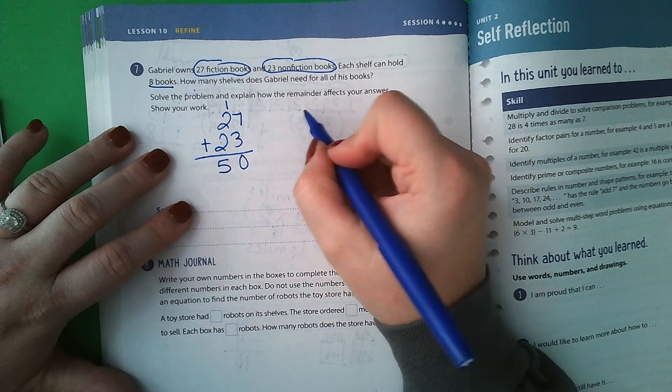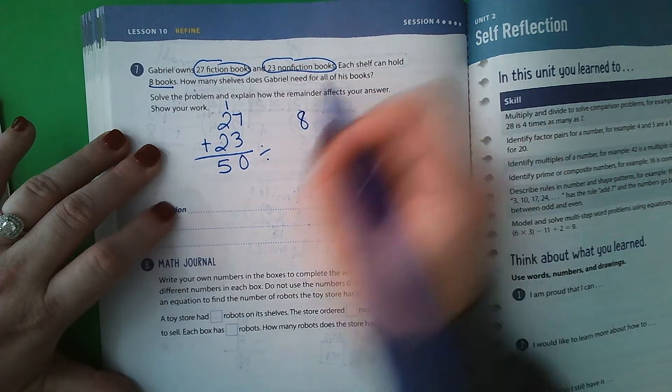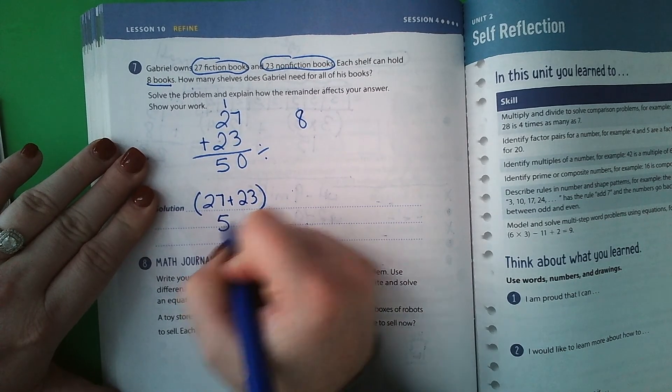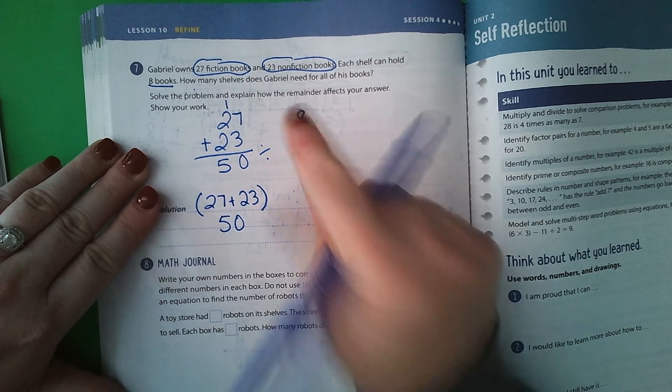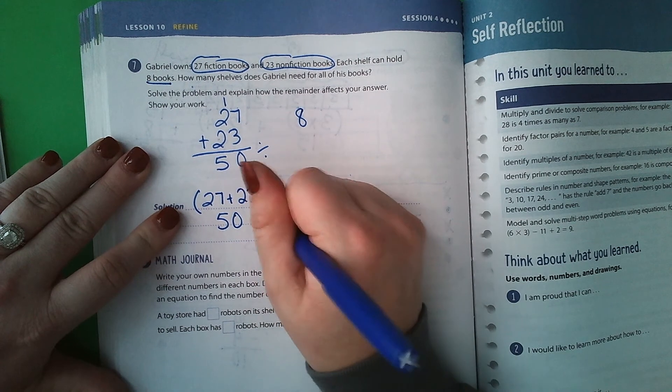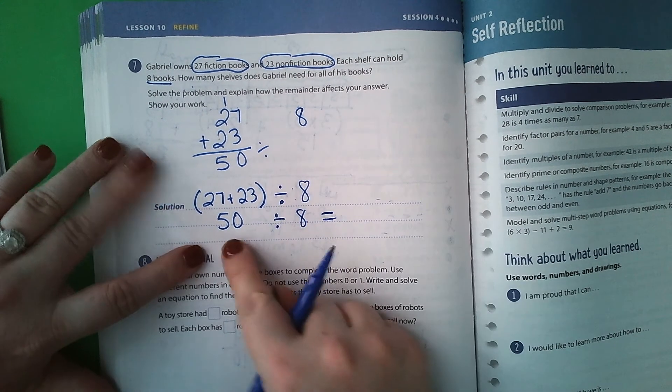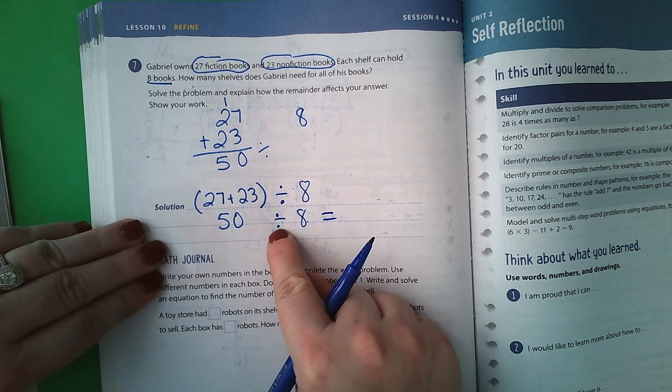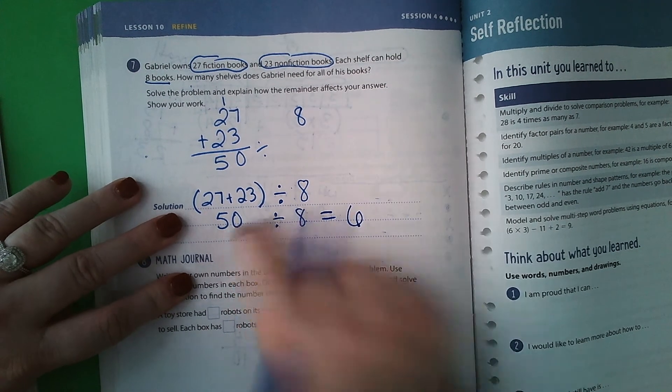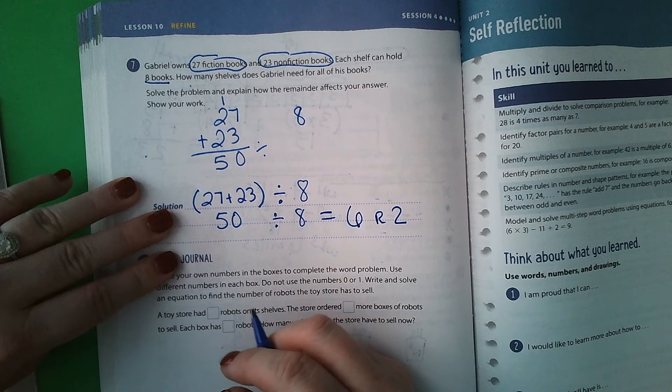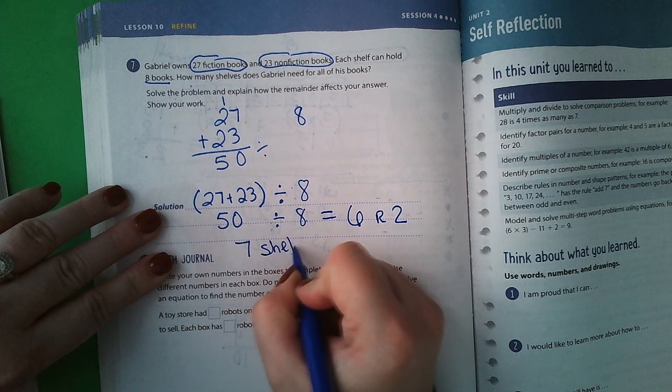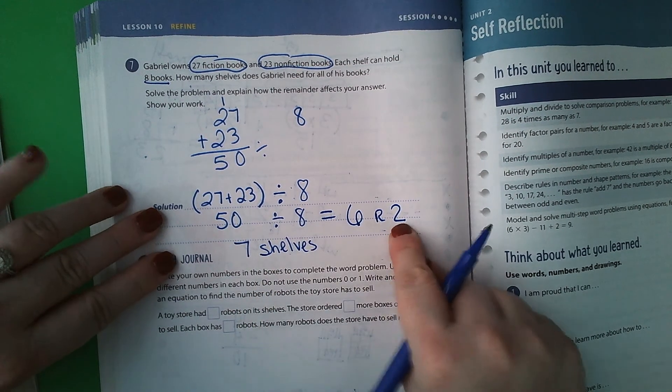And each shelf holds 8. So I need to divide. So if I write my problem, it's going to be 27 plus 23. We know that's 50. But then if each holds 8, to find out how many shelves, we're going to have to divide it by 8 books that go on each shelf. So divide by 8. So 50 divided by 8. Well, I know that 6 times 8 is 48, which is really close to this. But then that leaves 2 books left over. So to hold all of the books, Gabrielle's going to need 7 shelves because he's got to have some place to put those last 2 books.